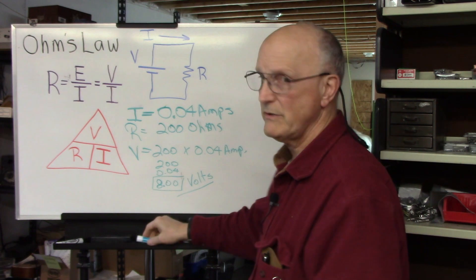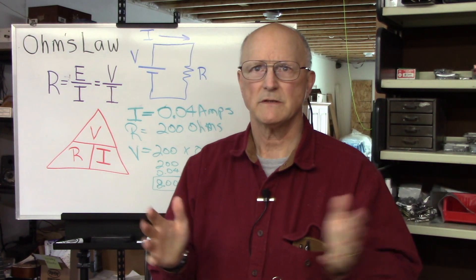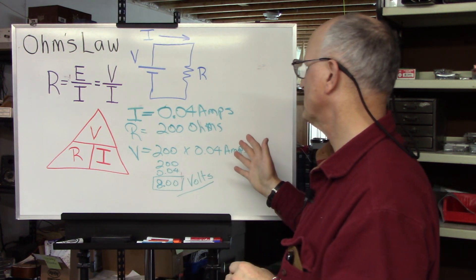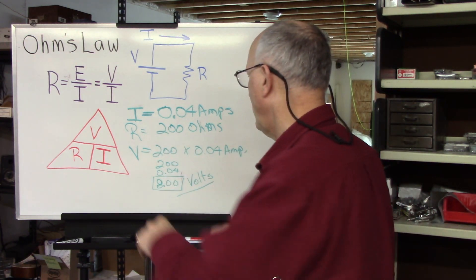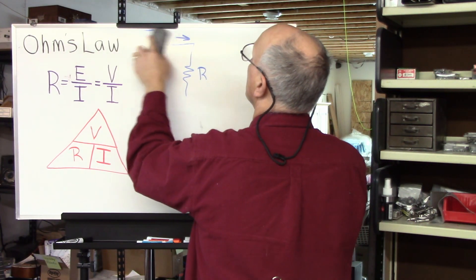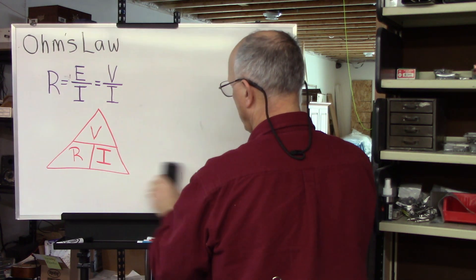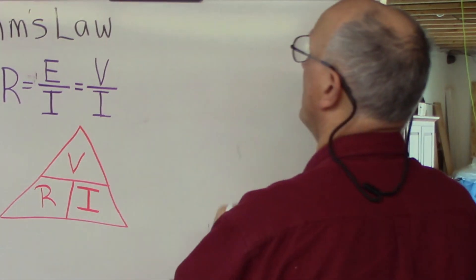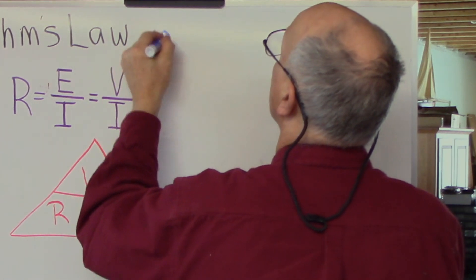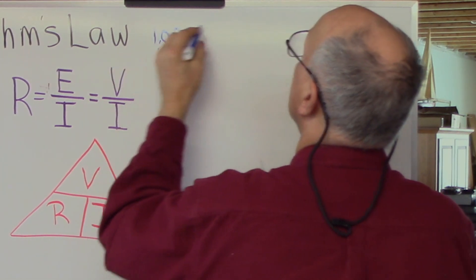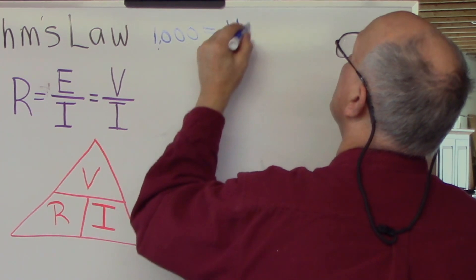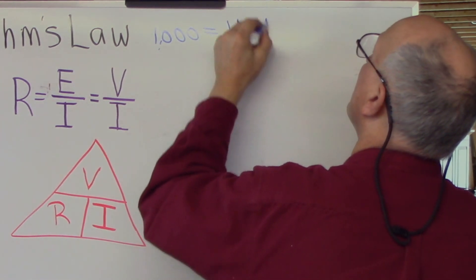Now, I want you to notice something, that there are units that are used for all of these things. If we are talking about, and this is an important point, we don't want you to be confused. 1,000 ohms is the same as 1 kilo ohm or 1 k ohm.